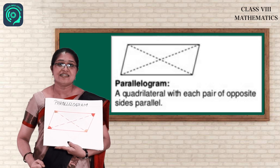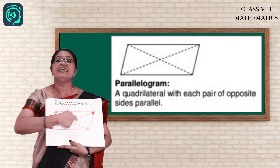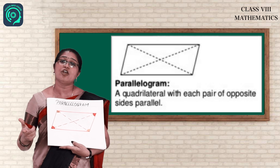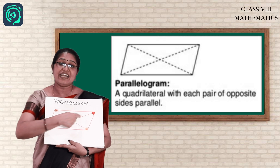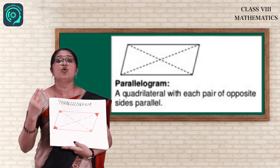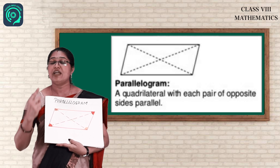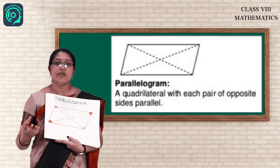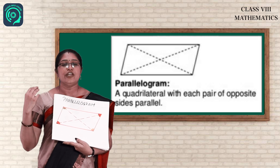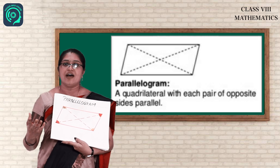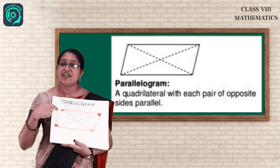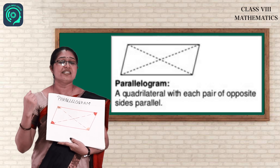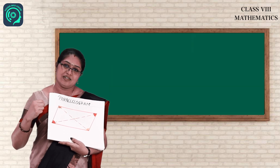Now what about the diagonals? Diagonals intersect each other and they bisect. What is the meaning of bisect? The line is divided into two equal parts. It is very important, children, when you are doing practical geometry or finding the area — the diagonals bisect each other. Now let us see the next quadrilateral.